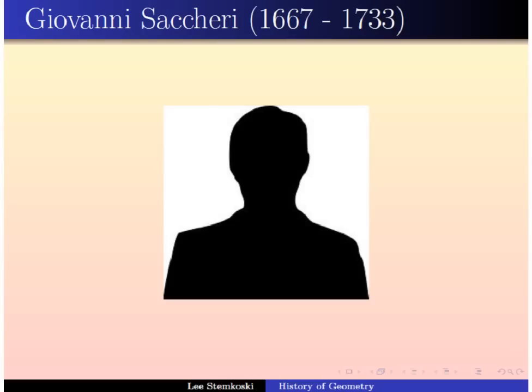One of the first people to do very important work in this area was Giovanni Saccheri. In his investigations, he tried to assume the fifth postulate was false and derive a contradiction. One of the figures he used extensively is now called the Saccheri quadrilateral — a quadrilateral containing three right angles, where he tries to show the fourth angle must also be a right angle. He investigated what happened when the fourth angle was acute, obtuse, or a right angle. He was able to prove that if the angle was obtuse, that implies Euclid's fifth axiom is true, obtaining the contradiction. However, when the fourth angle was acute, he derived many theorems of what we now call non-Euclidean geometry but was unable to derive a contradiction.